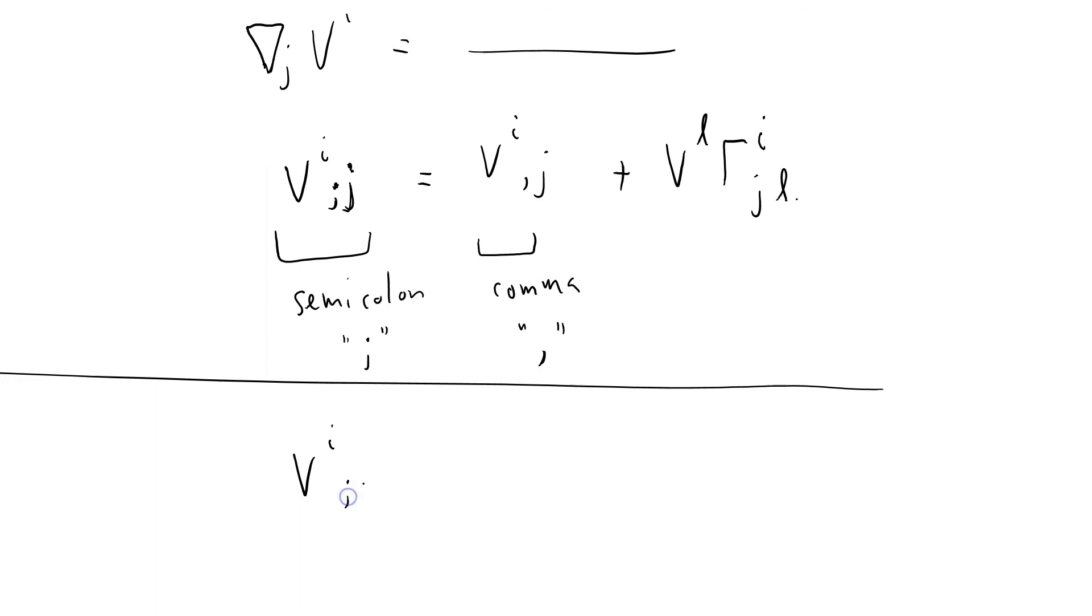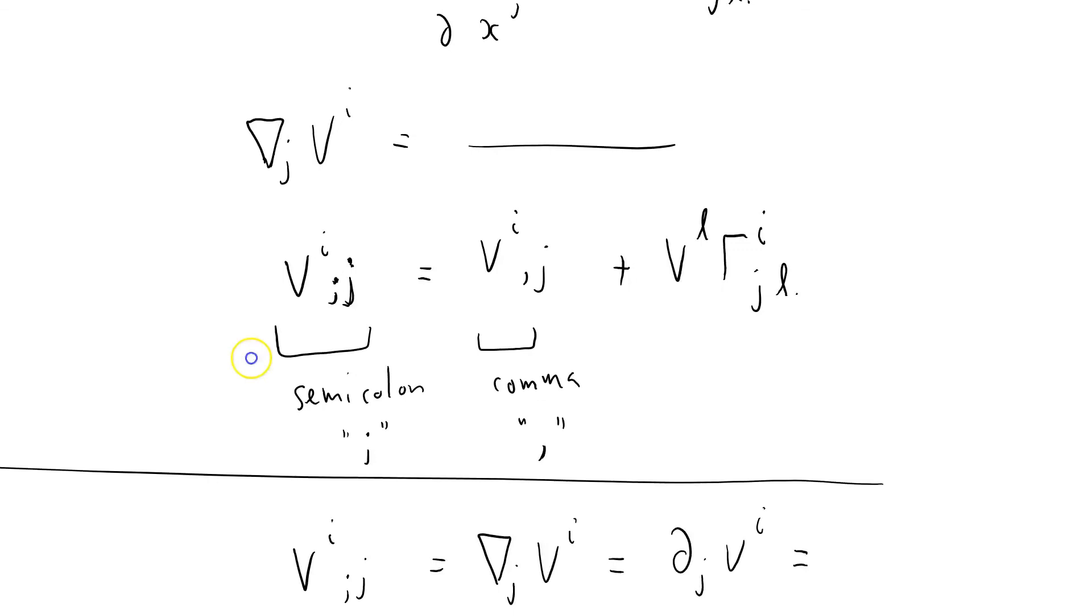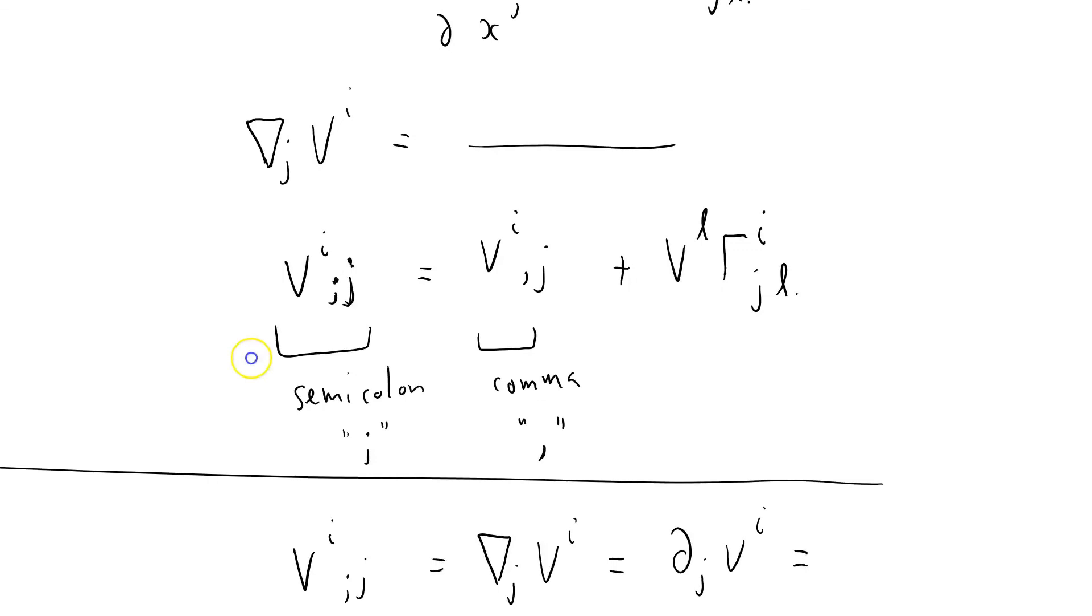So, the beauty of it is that this thing, v^i semicolon j, which equals ∂_j v^i, which equals... There's other notations as well. There's a tensor. By construction, because we spent all that time faffing around with the Christoffel symbol, the differential... This is not a tensor. But this thing is. It's a tensor.